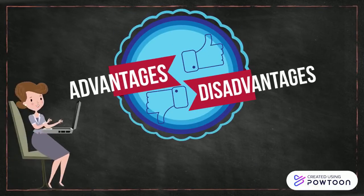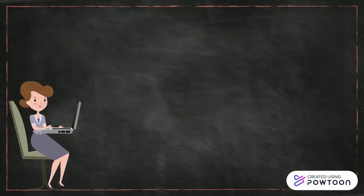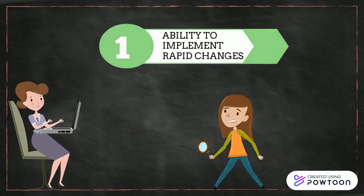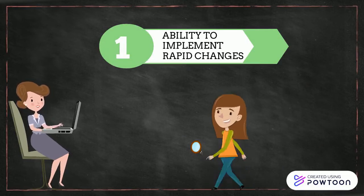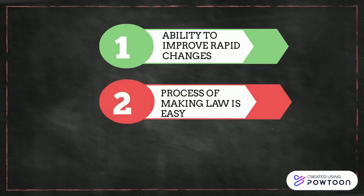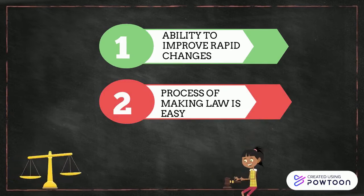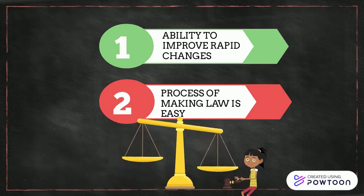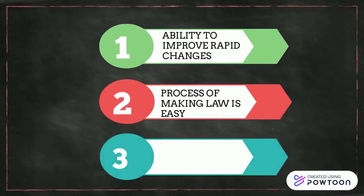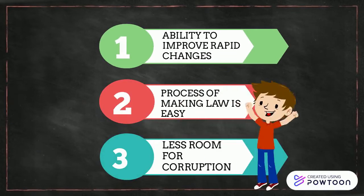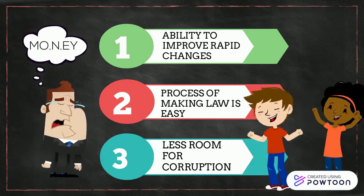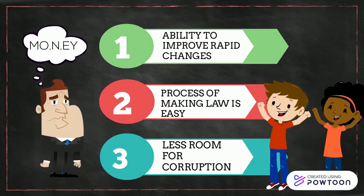Some of the advantages of this form of government are: First, the ability to implement rapid change, since the person or group in power can make any change they deem necessary immediately. Second, the process of making law is easy — the ruler or ruling group simply decides what is law, and it becomes so without political debate or democratic vote. Thirdly, because a small group is in power, there is less room for corruption in the government; with only one central ruler or group of rulers, it is much more difficult for corruption to occur.